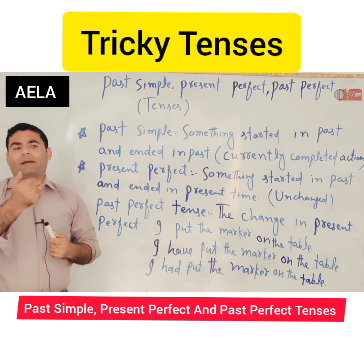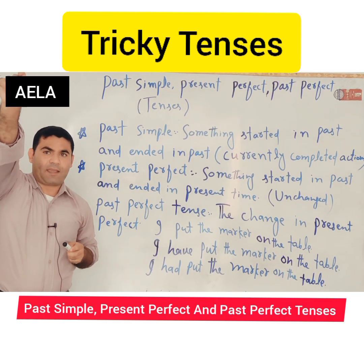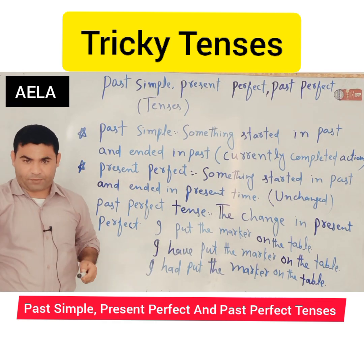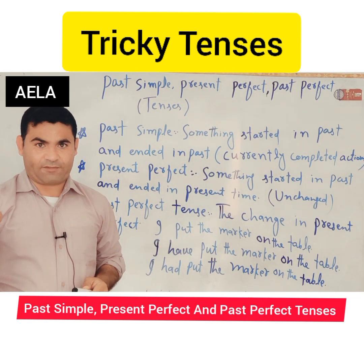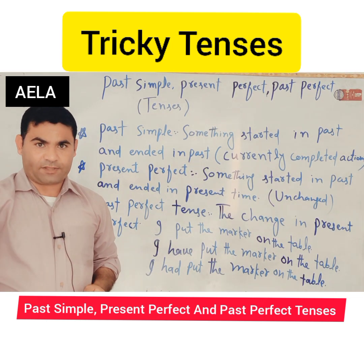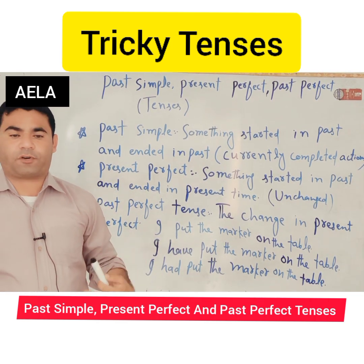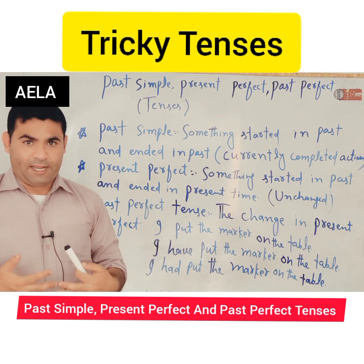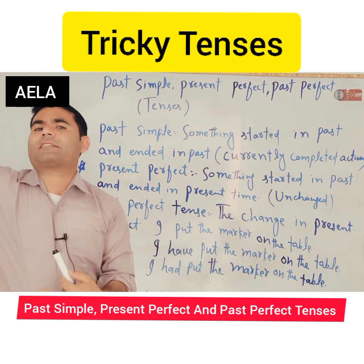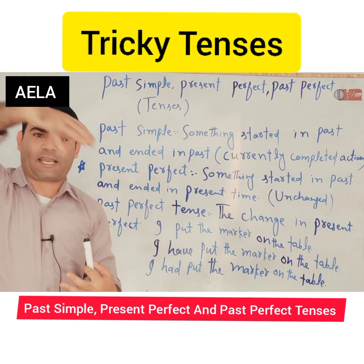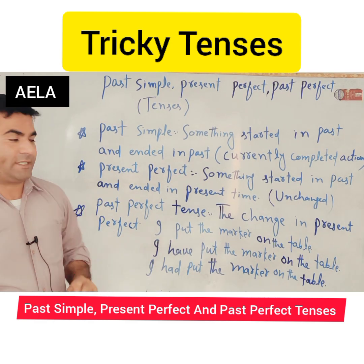For example, my students say 'we have come.' They came in the past time but they are still present in the class — they haven't gone back. So they say 'they have come.' Or for example, 'I have gone to Lahore,' meaning I am presently in Lahore. Something started in the past and came to the present time, so we use present perfect tense.